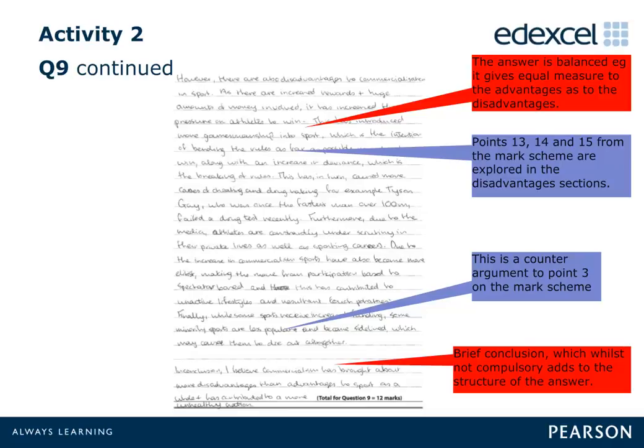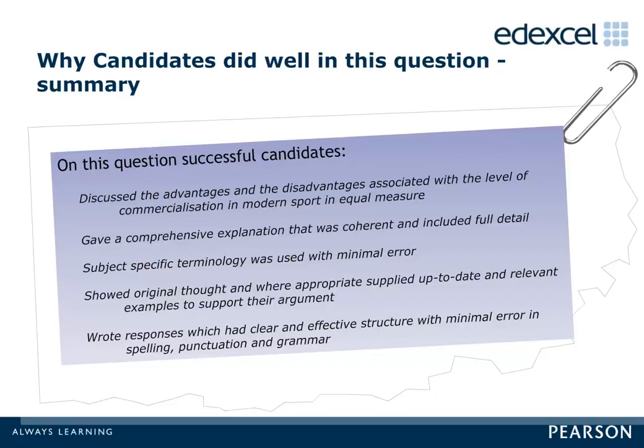It is usually a good idea to read the answer through more than once whilst referring to the indicative content and level descriptors before deciding upon a mark. Candidates did well on Question 9 because they discussed advantages and disadvantages of commercialisation in equal measure, gave a comprehensive and coherent explanation with full detail, used subject-specific terminology with minimal error, showed original thought with up-to-date relevant examples, and wrote responses with clear and effective structure and minimal errors in spelling, punctuation, and grammar.